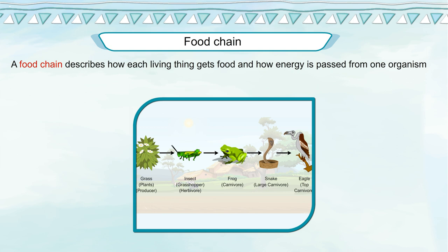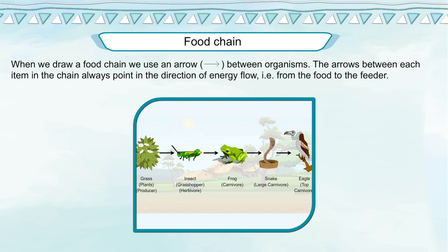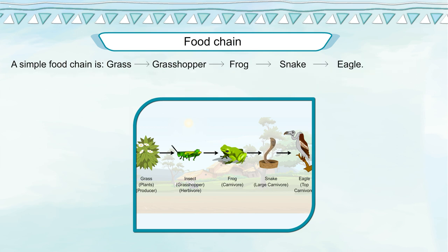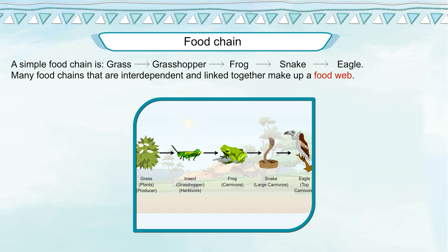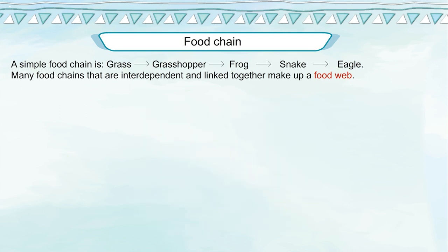A food chain describes how each living thing gets food and how energy is passed from one organism to the next in a habitat. When we draw a food chain, we use an arrow between organisms. The arrows always point in the direction of energy flow — from the food to the feeder. A simple food chain is: grass → grasshopper → frog → snake → eagle. Many food chains that are interdependent and linked together make up a food web.